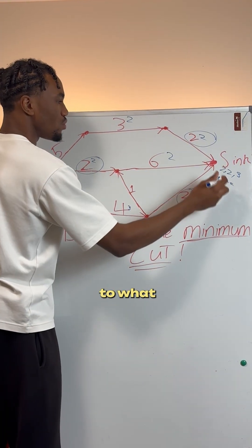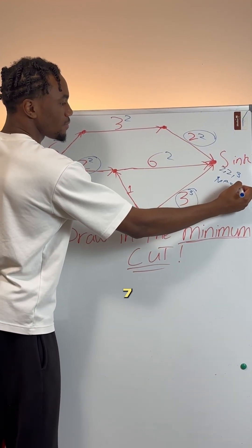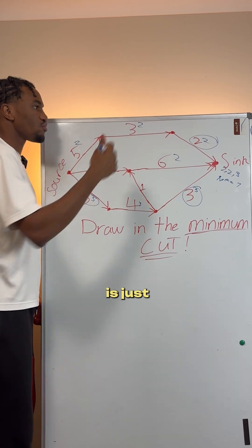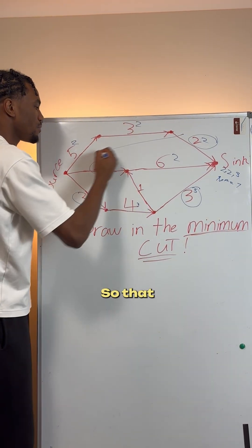So our max flow is equal to what? Four, seven. And then you see the ones that are full here. All we have to do is just draw a line through them. So that.